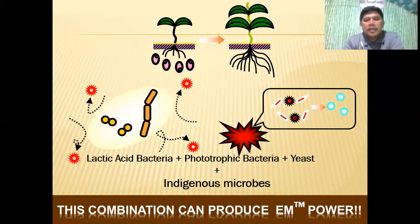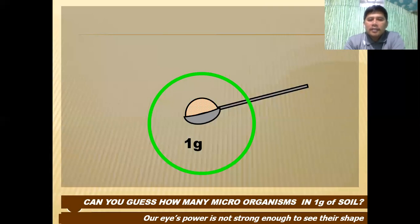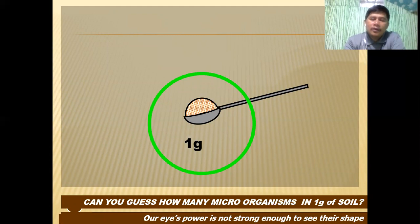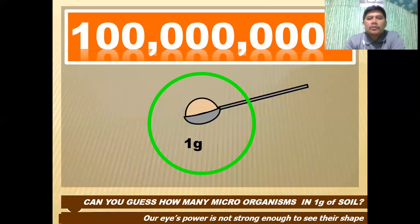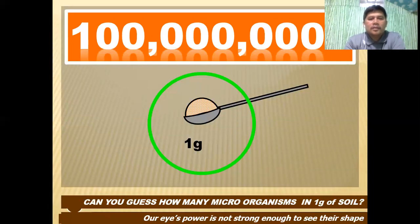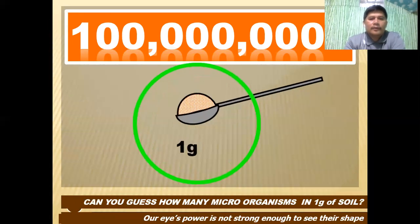The combination of these three bacteria, including indigenous microbes, is what we now call EM technology. Can you guess how many microorganisms are in just one gram of soil? They are not visible to the human eye and can only be seen using microscopes — there are about 100 million microbes in just one gram of soil.